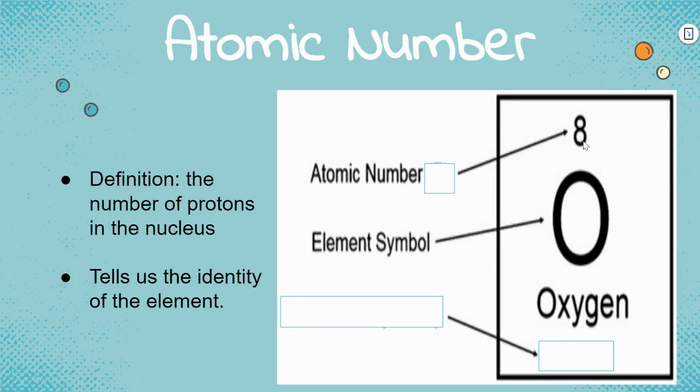Again, it's the address. So at eight on the periodic table, it will always only be oxygen. At seven, it'll only be nitrogen. At six, carbon. At five, boron. At one, hydrogen. That's what an atomic number is telling you. How many protons it has, but also what the element is going to be.